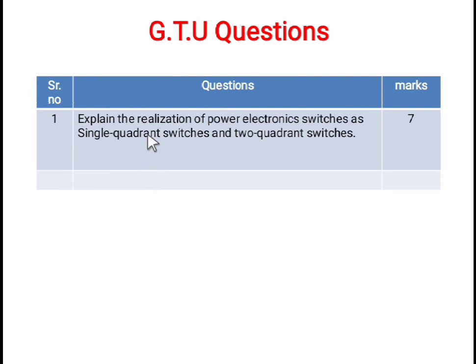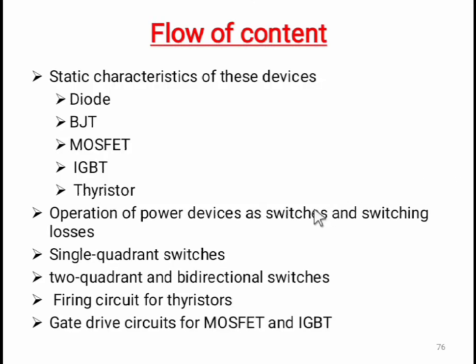A likely exam question is to explain the realization of power electronic switches as single quadrant switches and two quadrant switches, covering how devices like BJT, MOSFET, IGBT, and diode operate in different quadrant regions depending on forward or reverse bias connection. In this lecture we completed single quadrant switches and two quadrant switches. In the next lecture we will cover the firing circuit for thyristors and gate driver circuit for MOSFET and IGBT — that is, how to turn on the thyristors and how to turn on the MOSFET and IGBT. Thank you.